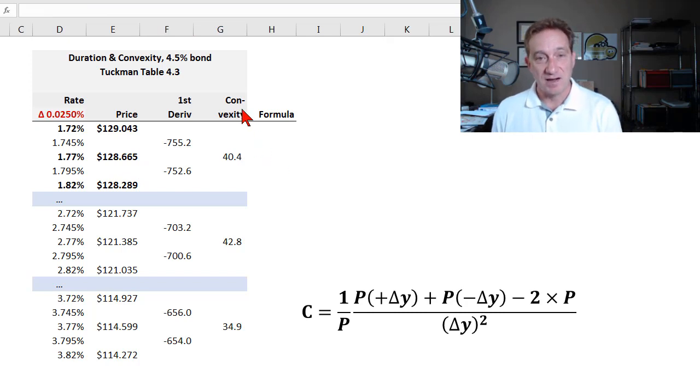And so that allows him to show the convexity or allows us to construct the convexity, and it's similar. Common misconception is that the duration is the first derivative and convexity is a second derivative, but it's more accurate to say duration is a function of the first derivative and convexity similarly is a function of the second derivative.